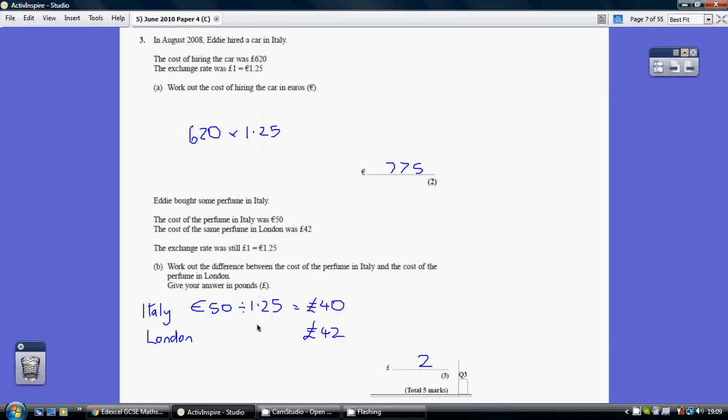Multiplying for bigger, dividing for smaller. 50 divided by 1.25 is 40. The question asks for the difference between the costs. So the difference is 2 pounds.